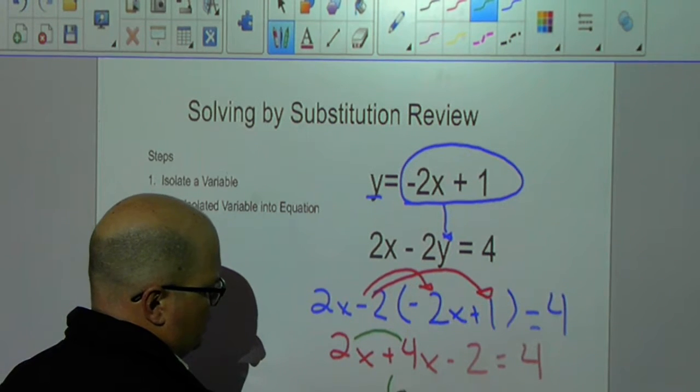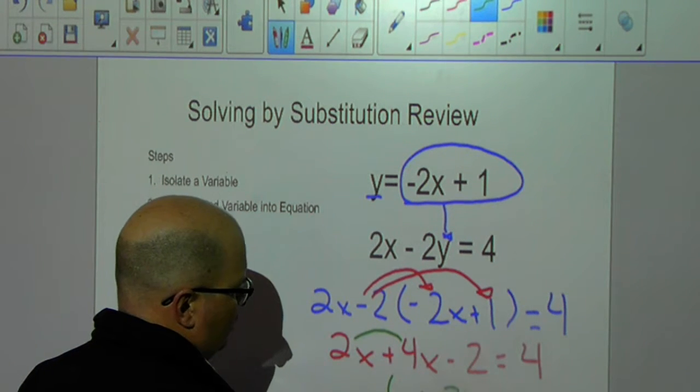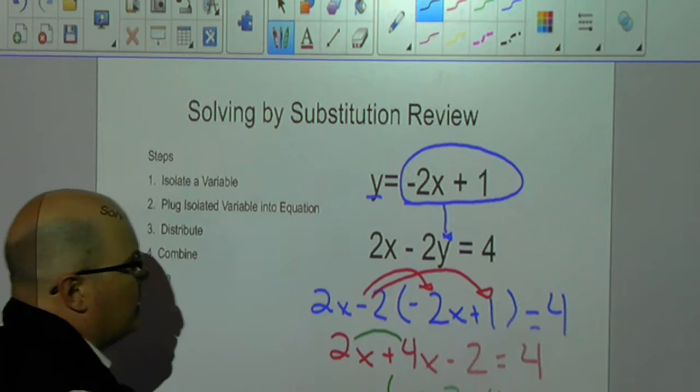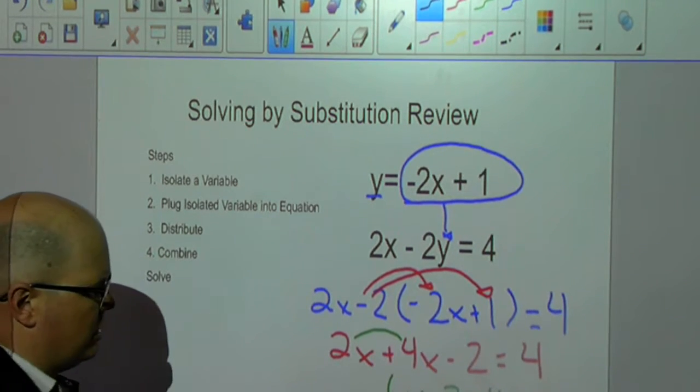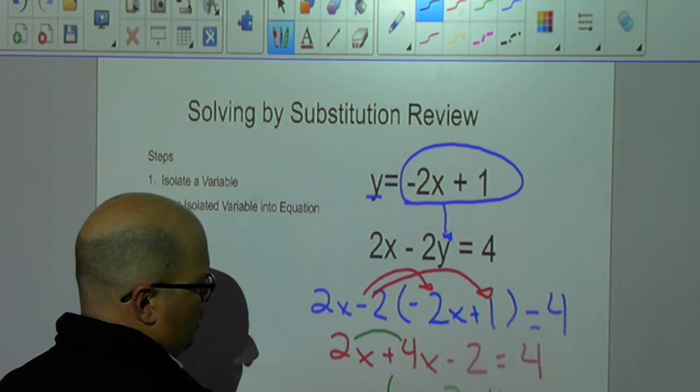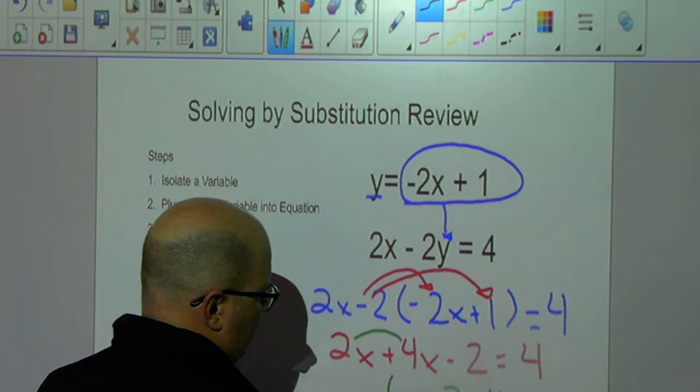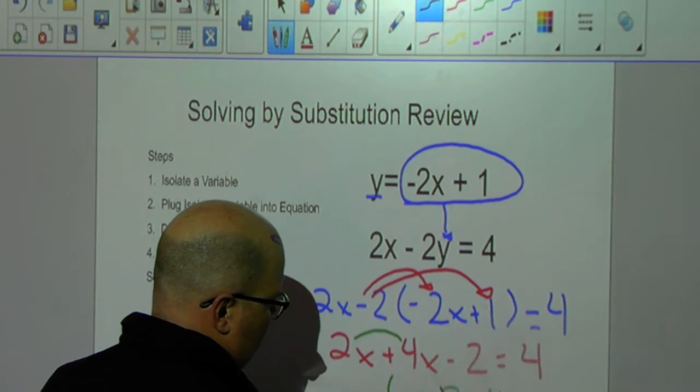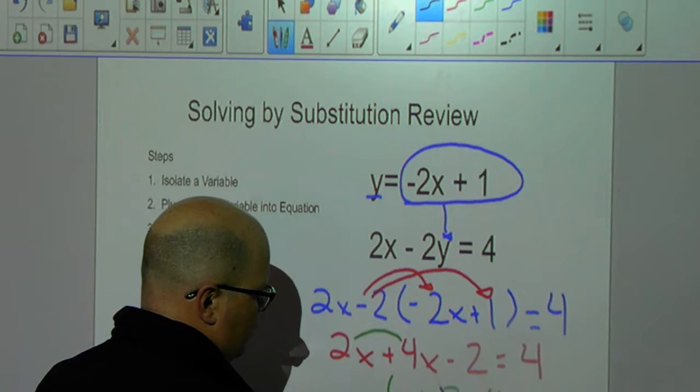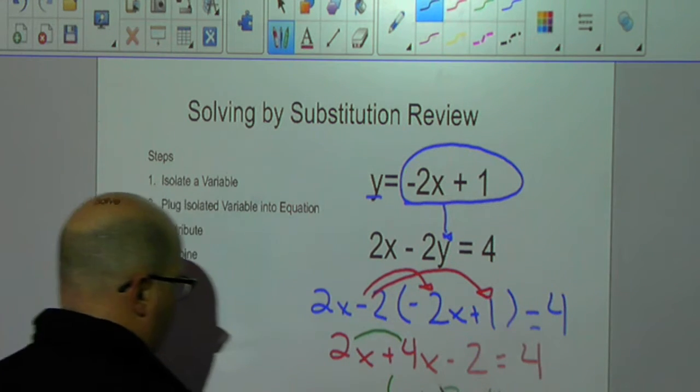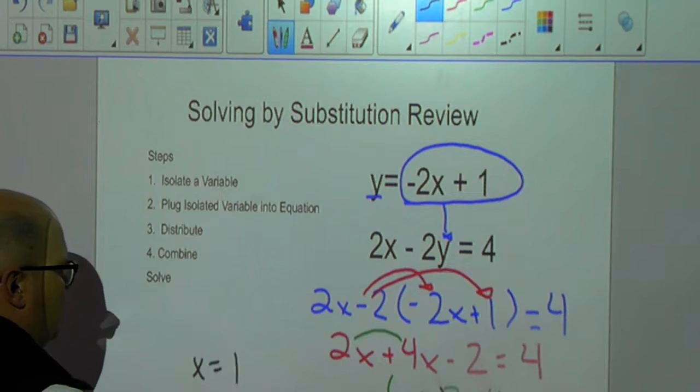When I combine those, I have 6x minus 2 equals 4. And lastly, all I need to do now is solve. So, I'm going to move my 2 to the other side of the equation by taking its opposite, that goes away. I'm left with 6x equals 6. I'm going to divide both sides by 6, and I have x equals 1.